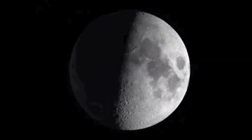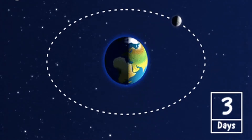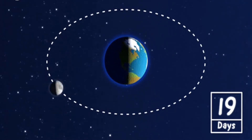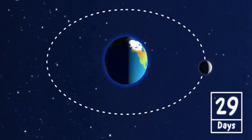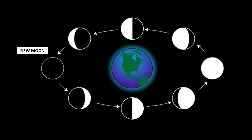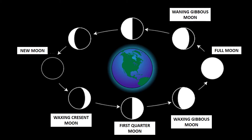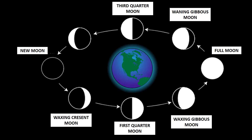Each phase repeats itself every 29.5 days. As the Moon orbits or circles the Earth, the phase changes. The Moon goes through 8 major phases: New Moon, Waxing Crescent Moon, First Quarter Moon, Waxing Gibbous Moon, Full Moon, Waning Gibbous Moon, Third Quarter Moon, and Waning Crescent Moon.